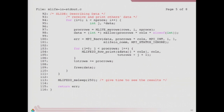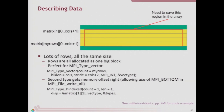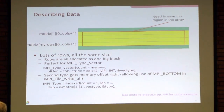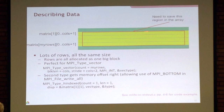It's worth talking about how that row block function works. The data we need in our checkpoint is actually just the local rows — not data from other processes, which is already stored in those processes, and not the edge ghost cells, which are also well-defined. Not storing extra data in our checkpoints is good practice. The way we construct this type: first, we recognize it's a vector type. The vector starts here with a block length of this length and a stride that goes to the beginning of the next row.